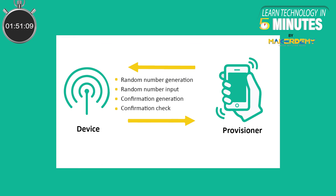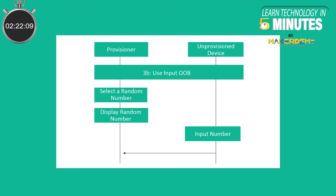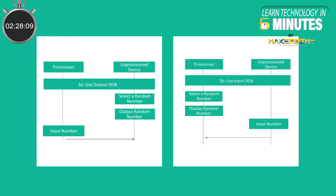Step 4: Authentication. The next step is to authenticate the unprovisioned device. This usually requires an action by the user by interacting with both the provisioner and the unprovisioned device. The authentication method depends on the capabilities of both devices used. In one case, called the output OOB, the unprovisioned device could output a random signal or multiple-digit number to the user in some form, such as blinking an LED a number of times. That number is then input into the provisioning device via some input method. Other cases include an input OOB, where the number is generated by the provisioner and entered into the unprovisioned device. Regardless of the authentication method used, the authentication also includes a confirmation value generation step and a confirmation check step.